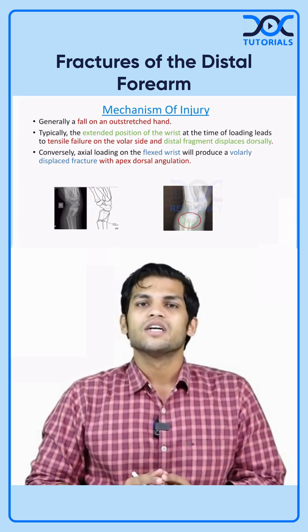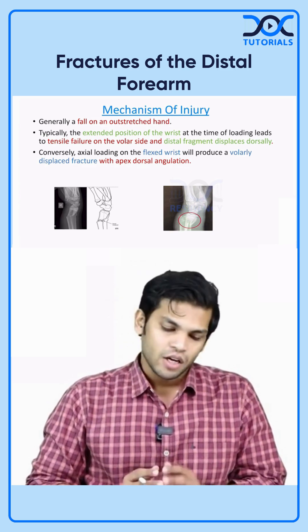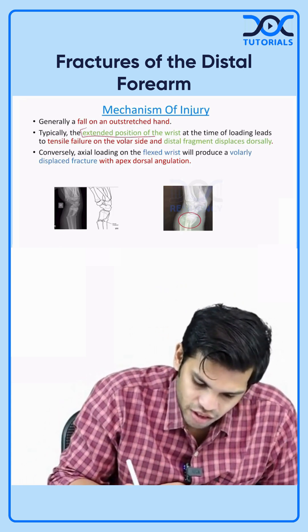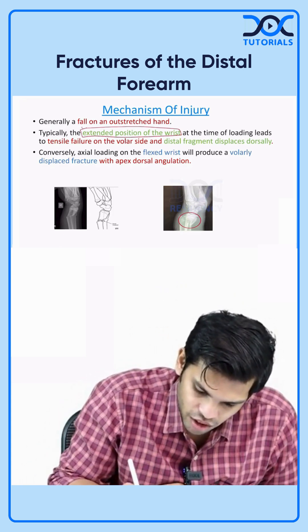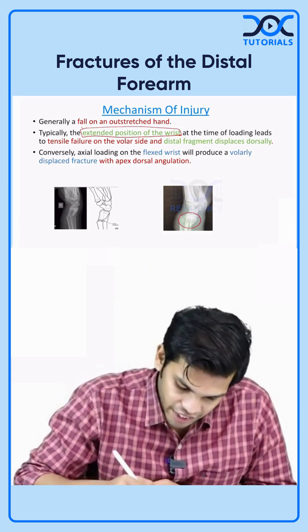Whereas, in case of distal radius, the most common cause of the fracture is fall on an outstretched hand. When you fall on an outstretched hand, the position of the wrist is very important. If the wrist is in extended position at the time of the loading stress, then the volar surface will fail in tension.